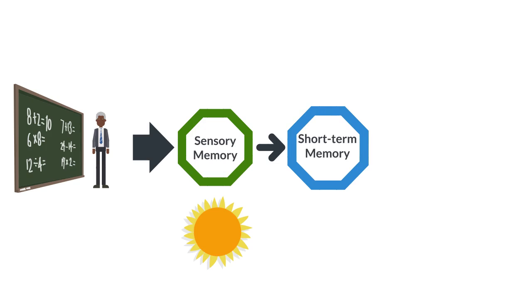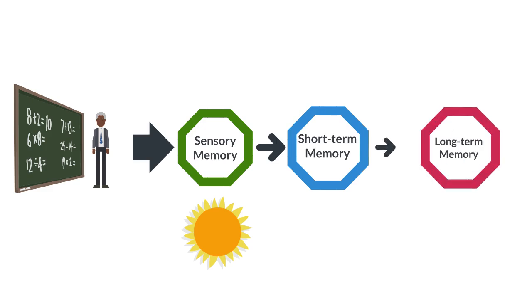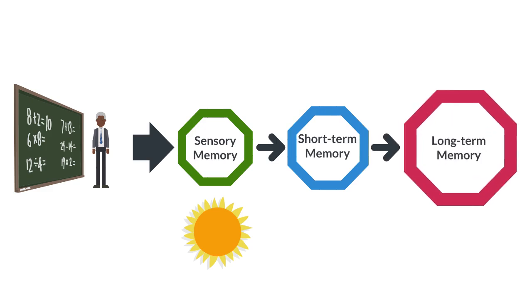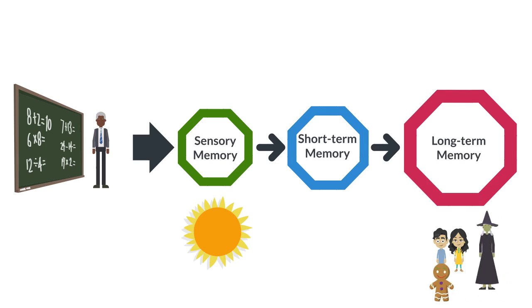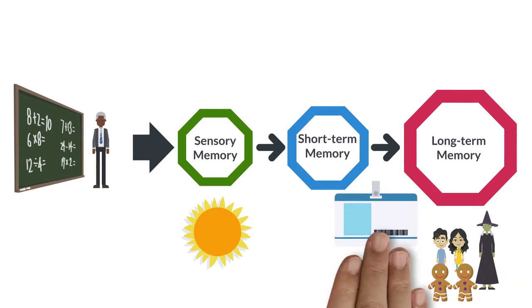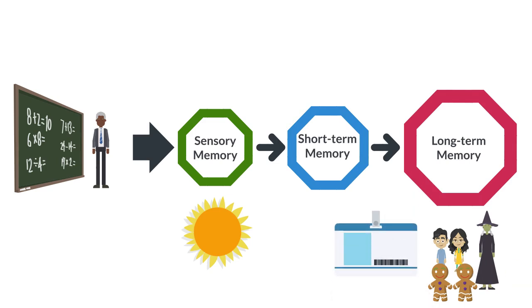Some of what goes into your short-term memory does get encoded into long-term memory, which is why you can remember some things for years. For instance, when you were a child, you probably heard a story about two siblings lost in a forest who met a witch who wanted to turn children into gingerbread. If you remember the name of the boy and girl in the story, it's because those names are stored in your long-term memory and you're able to retrieve them. In case you don't remember their names, their names are Luke and Leia — or perhaps Hansel and Gretel.